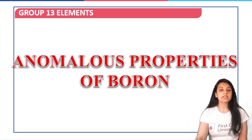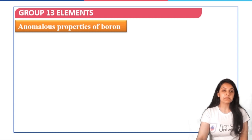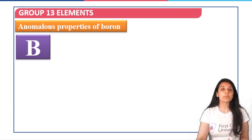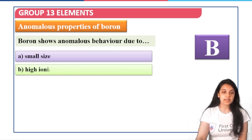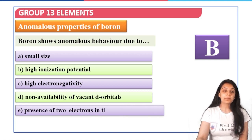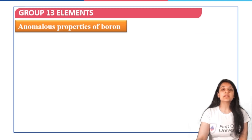Let's begin with the anomalous properties of boron. Since boron is the first element of group 13, its small size and other properties give it properties different from the rest of the elements of the same group, so we say it shows anomalous behavior. The five reasons responsible are: small size, high ionization potential, high electronegativity, non-availability of vacant d orbitals, and presence of two electrons in the penultimate shell.